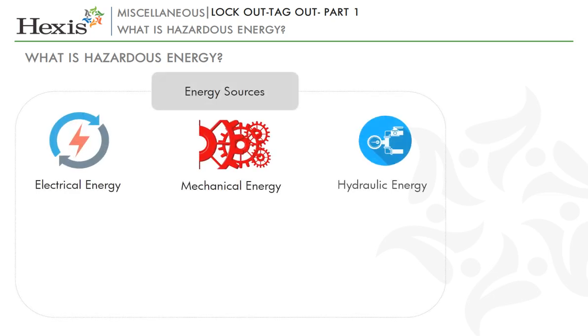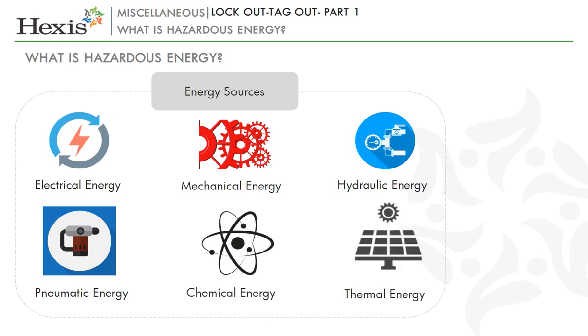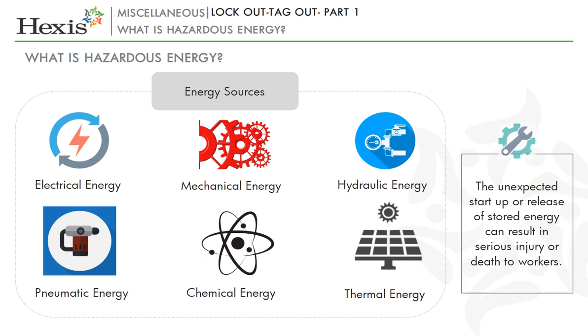So far you have understood the importance of lockout tagout in the industry and research settings. Workers are injured on the job because of exposure to hazardous energy. Let us now learn what is hazardous energy. Energy sources including electrical, mechanical, hydraulic, pneumatic, chemical, thermal or other sources in machines and equipment can be hazardous to workers. During the servicing and maintenance of machines and equipment, the unexpected start-up or release of stored energy can result in serious injury or death to workers.